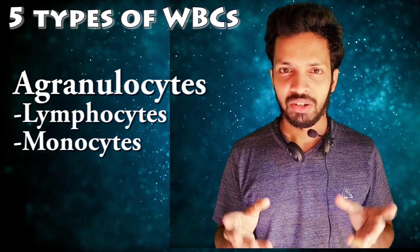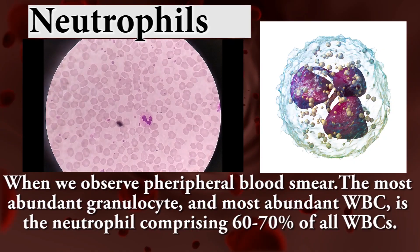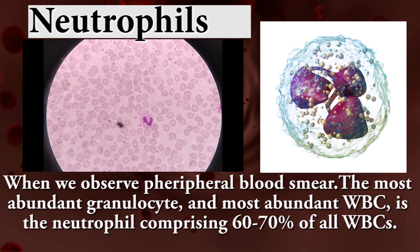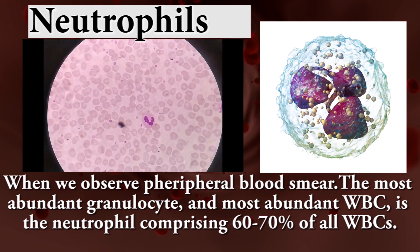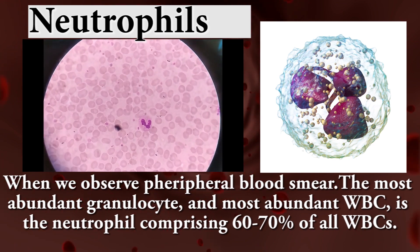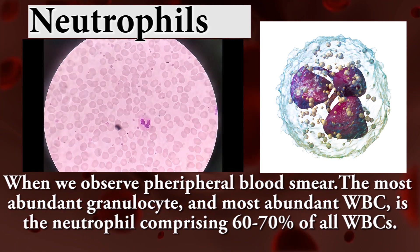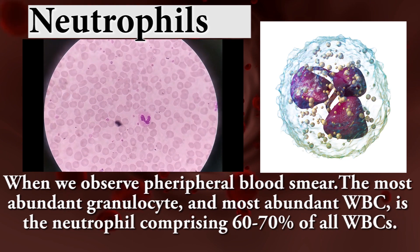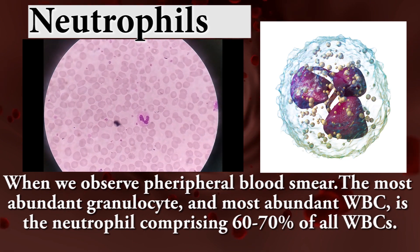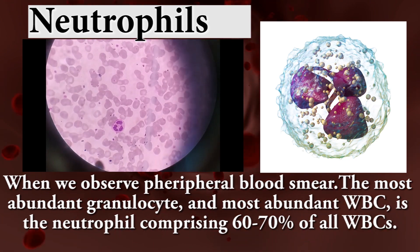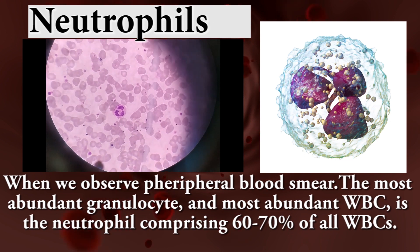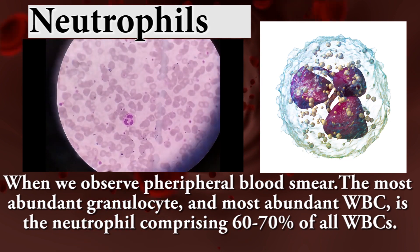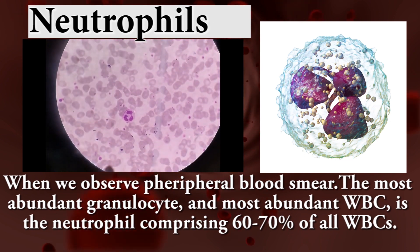Let's see one by one. Neutrophils — when we observe peripheral blood smear, the most abundant granulocyte and most abundant WBC is the neutrophil, comprising 60 to 70% of all WBCs.